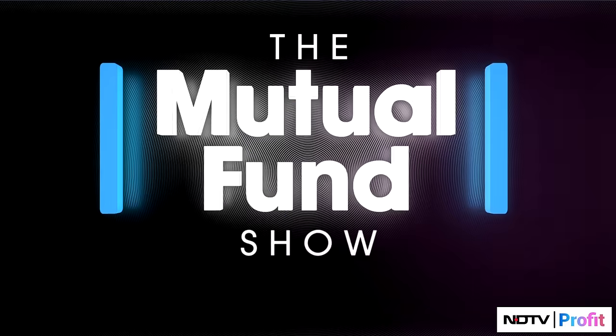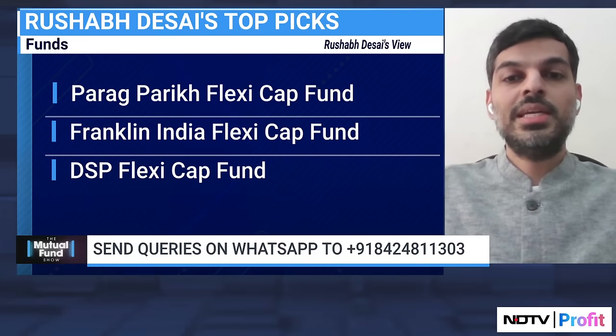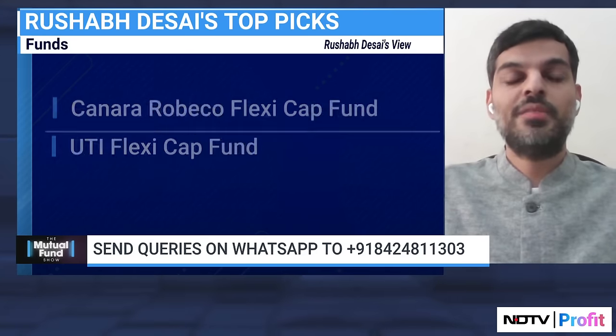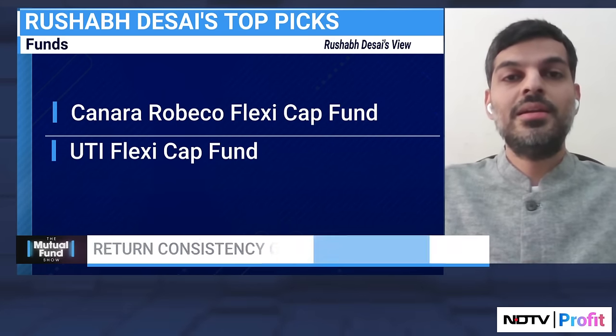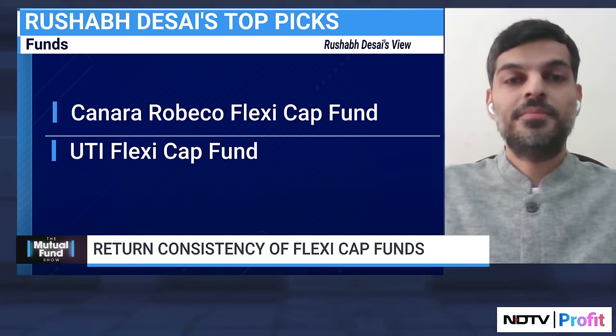Based on all of this, there are five funds I recommend to my clients in the FlexiCap category: first is Parag Parikh FlexiCap Fund, second is Franklin India FlexiCap Fund, third is DSP FlexiCap Fund, fourth is Canara Robeco FlexiCap Fund, and fifth is UTI FlexiCap Fund. One can create an equal proportion portfolio — 20 percent each — in terms of both lump sum and SIP. Of course, this would change depending on the nature of the investor, but assuming a fresh start with average age and investing power, these five with equal allocation form a standard recommendation.